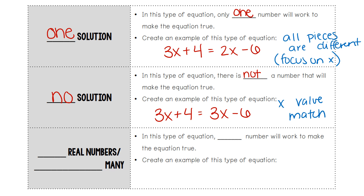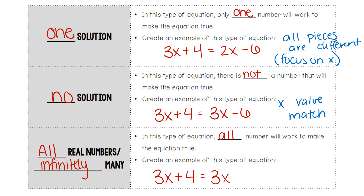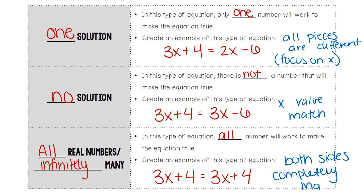The last type is called all real numbers. Sometimes it is called infinitely many solutions. In this type of equation, all numbers will work to make the equation true — all answers are correct. An example would be 3x plus 4 equals 3x plus 4. Both sides completely match. If everything matches in the equation — x values, whole numbers, and positive and negative signs — then it is an infinite solution.